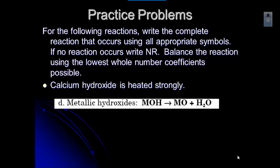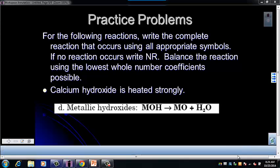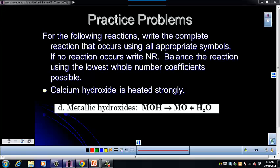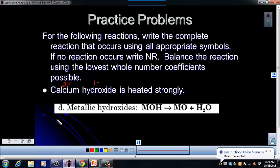You should have looked to see that there's one for metallic hydroxides. Calcium is a metal, so it's a metallic hydroxide, and we're heating it. The products on the right are the metal oxide plus water. So let's go ahead and write the reaction. Remember that we need to give the correct formula. The formula for calcium hydroxide: calcium is a 2+, hydroxide is a 1−, so it's Ca(OH)₂.